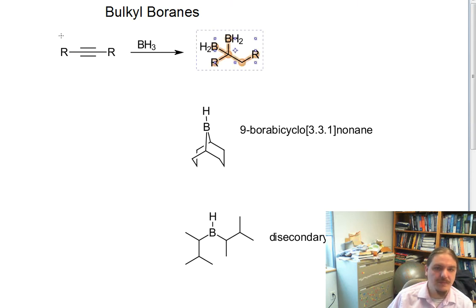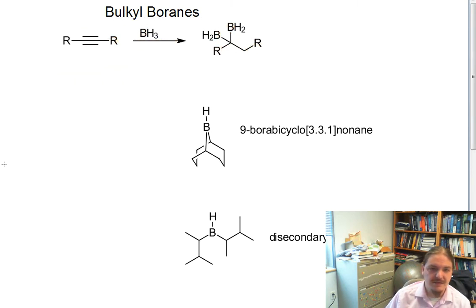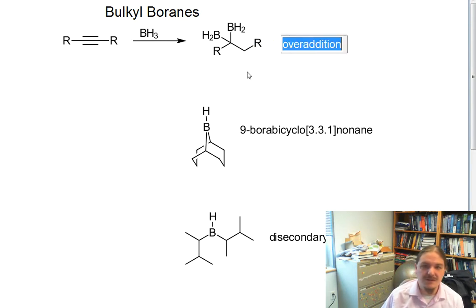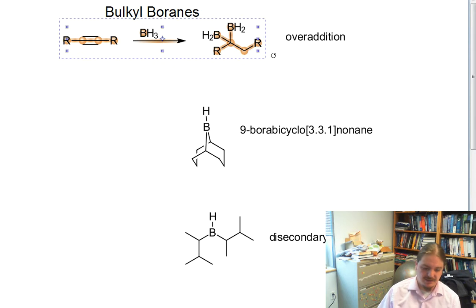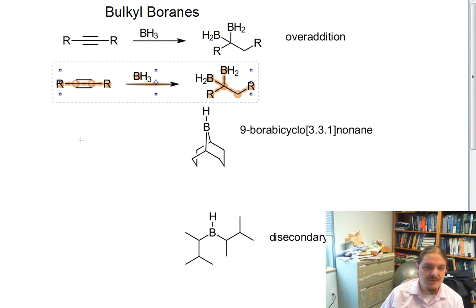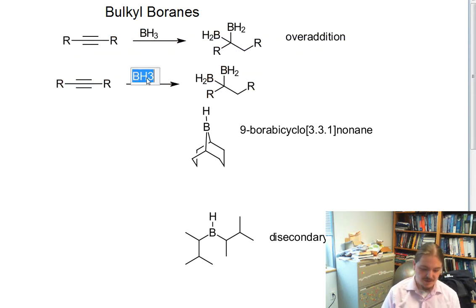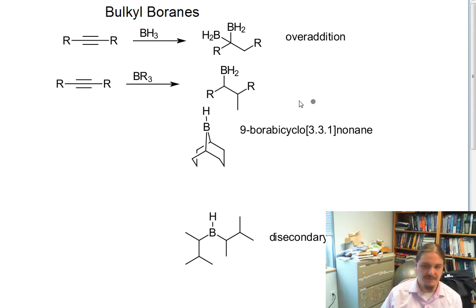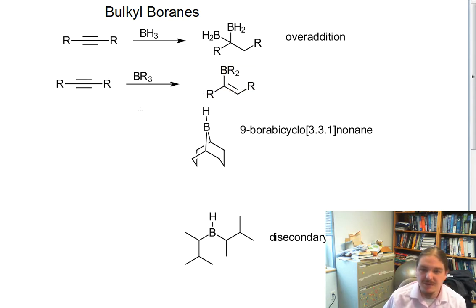If we replace the hydrogens on our borine reagent with R groups — especially if those R groups are big, bulky things — we can get this shenanigans to stop after one addition. The bulky R groups prevent further additions.